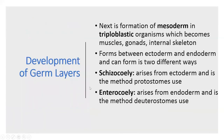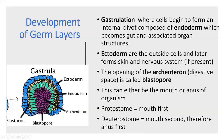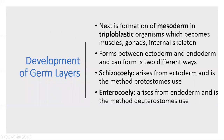After the endoderm and ectoderm form, we start forming our mesoderm in between those two layers, and this only occurs in triploblastic organisms because they have three layers. The mesoderm forms between the ectoderm and endoderm, and it can form in two different ways: schizocoelously or enterocoelously. Based on whether you are a protostome or deuterostome, your mesoderm will form differently.